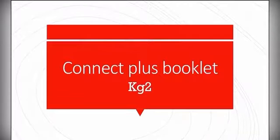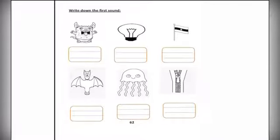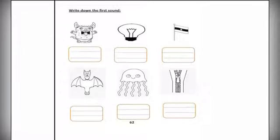Let's start our lesson, Connect Plus Pocket. Write down the first sound. The first one here, we have UGLY. Start with letter A.